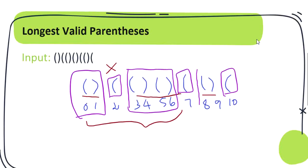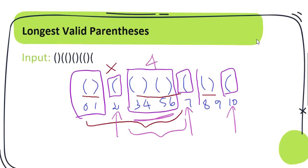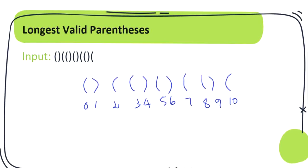So we are going to record the indexes of the extra brackets wherever they appear, and by using those indexes we are going to calculate the valid substrings between them. Whichever is the maximum length, we return the length of that substring. In this case it is 4, which is the longest valid parenthesis found.